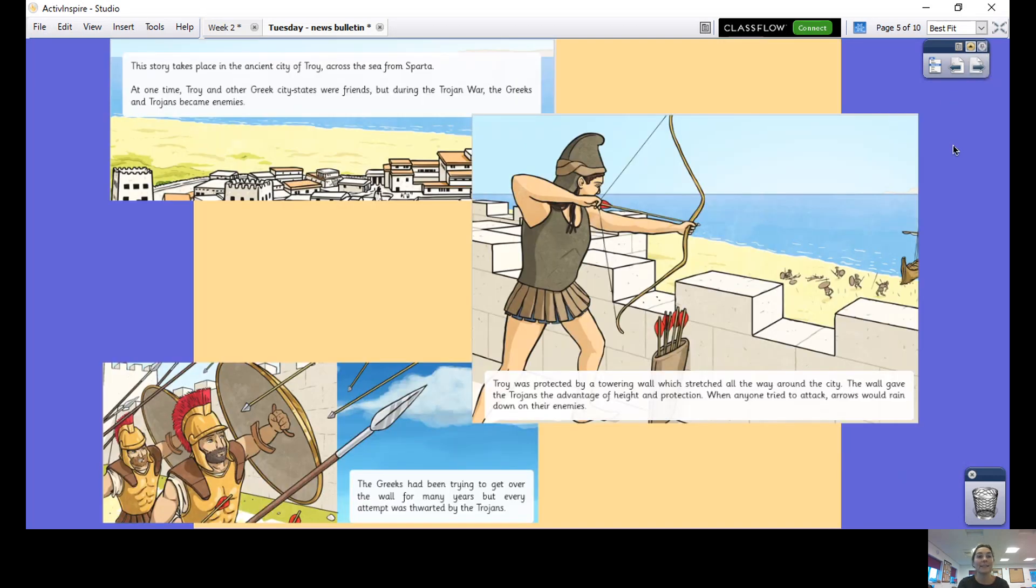This story takes place in the ancient city of Troy, across the sea from Sparta. At one time Troy and other Greek city states were friends, but during the Trojan War the Greeks and the Trojans became enemies. Troy was protected by a towering wall which stretched all the way around the city.